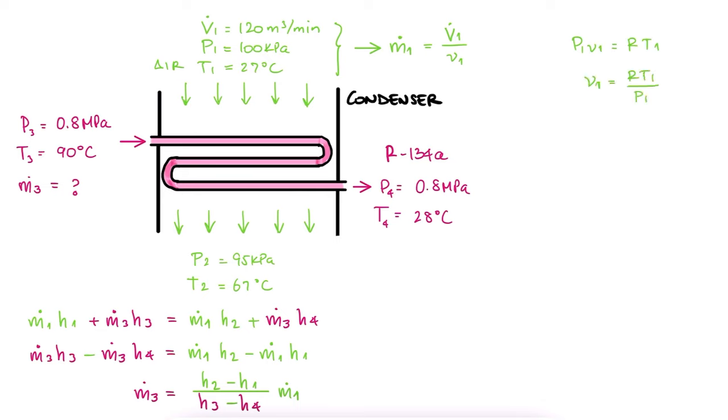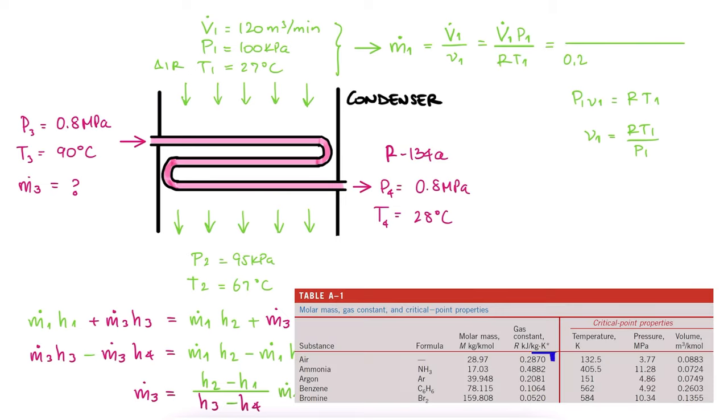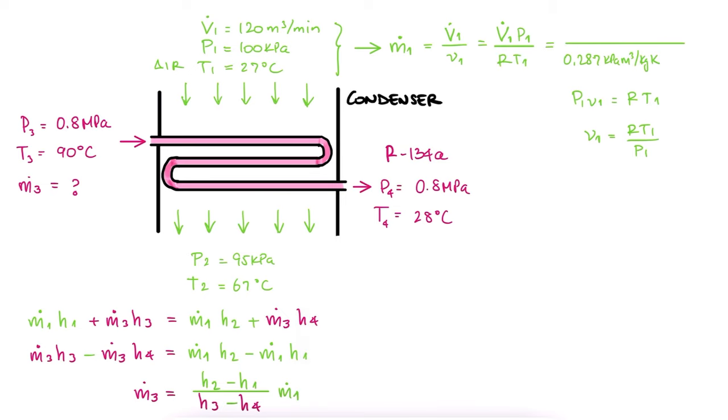We solve for specific volume, substitute that expression in the mass flow rate equation, find the gas constant for air, and substitute all values at the inlet with the temperature in Kelvin to find the mass flow rate.